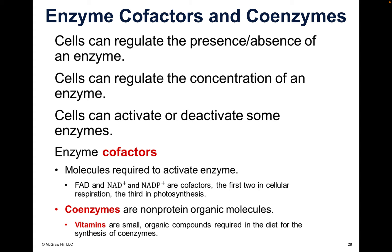Star this slide — cells can regulate the presence or absence of an enzyme, and they can regulate the concentration of an enzyme. Cells can also activate or deactivate some enzymes. Then there are enzyme cofactors, which are molecules required to activate an enzyme. FAD, NAD+, and NADP+ are called cofactors — you'll see these when we go through the Calvin cycle in the next few chapters. Coenzymes are non-protein organic molecules, like vitamins.